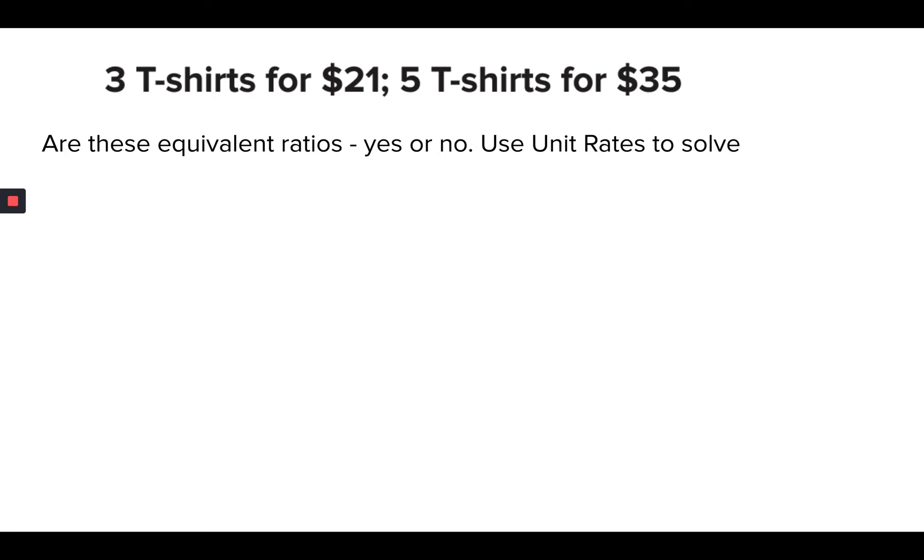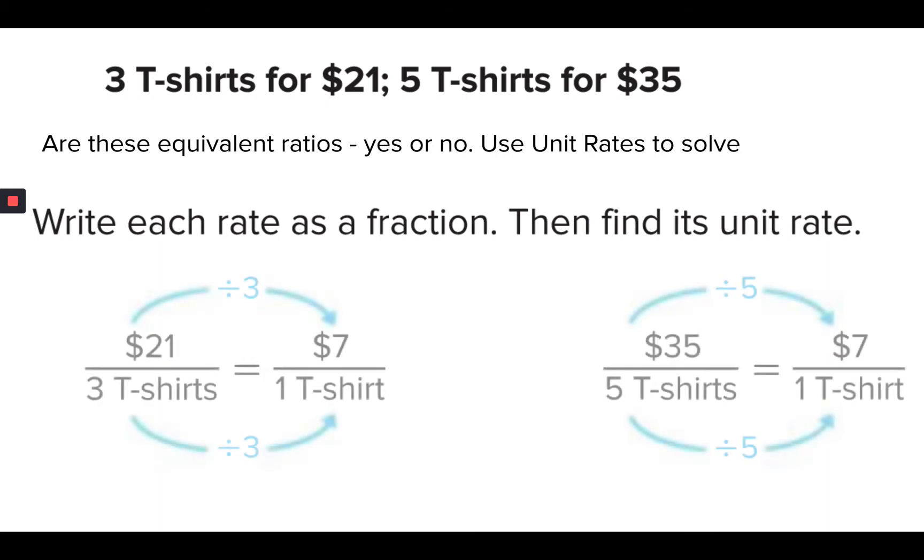Are these equivalent? 3 t-shirts for $21, 5 t-shirts for $35. So we write each one as a fraction. $21 for 3 t-shirts equals $7 for 1 t-shirt. That's what it reduces down to. That is the unit rate.